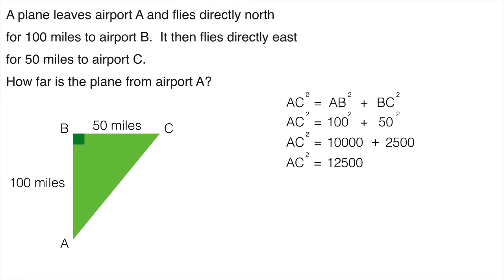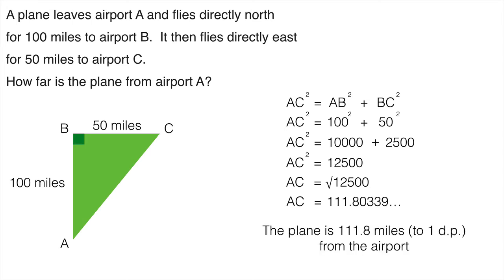Now at this point I need to find the square root. So AC is the square root of 12,500. Now the square root of 12,500 is not a whole number. So take your calculator, press 12,500 and the square root button, and you get an answer of 111.80339 etc.